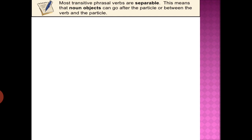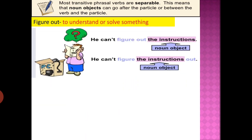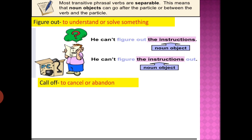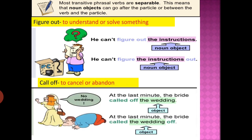Most transitive phrasal verbs are separable — you can place the noun object between the verb and the particle, or after the particle; both have the same meaning. For example, 'figure out' means to understand or solve something. 'He can't figure out the instructions' is correct, but you can also say 'He can't figure the instructions out' — both are acceptable.